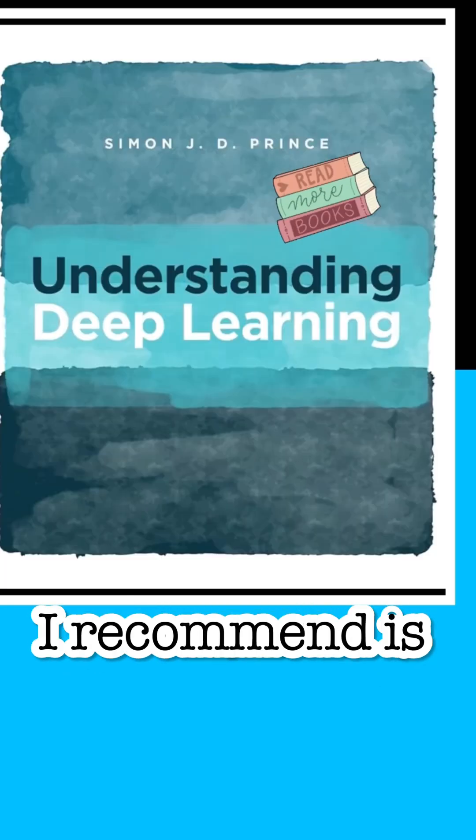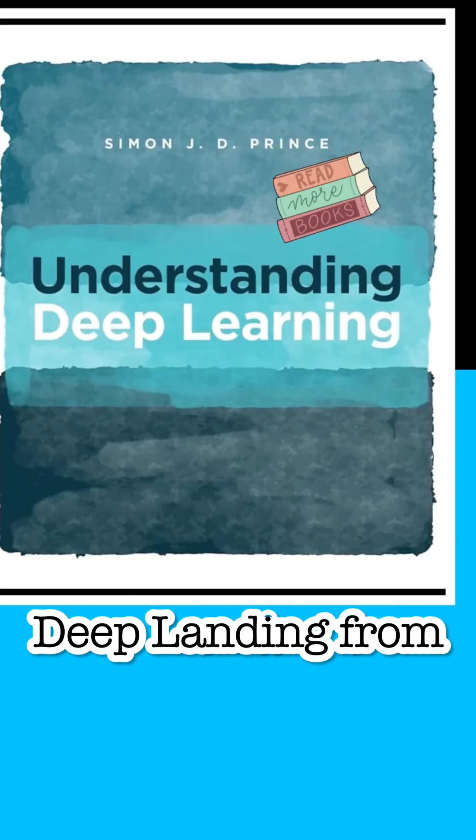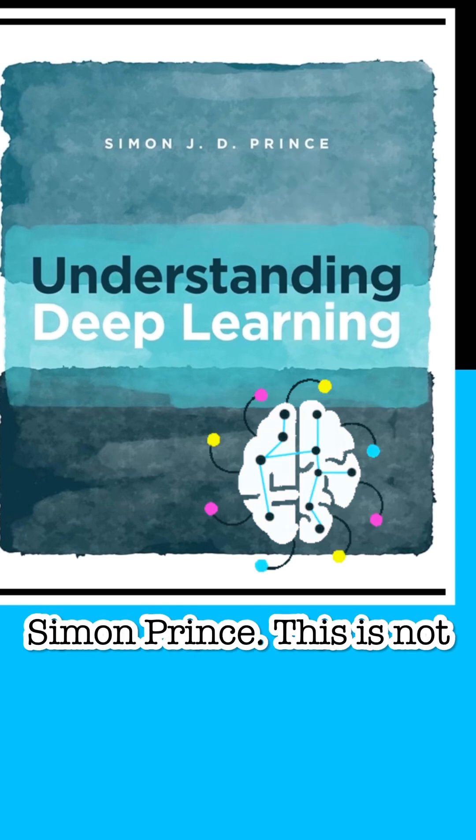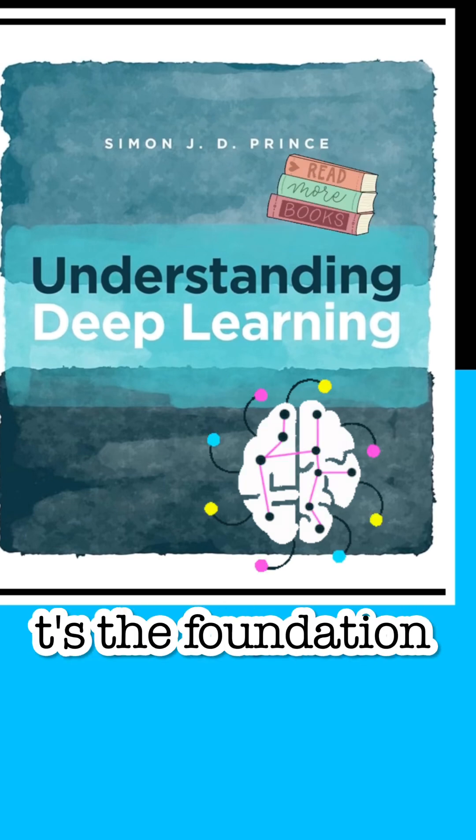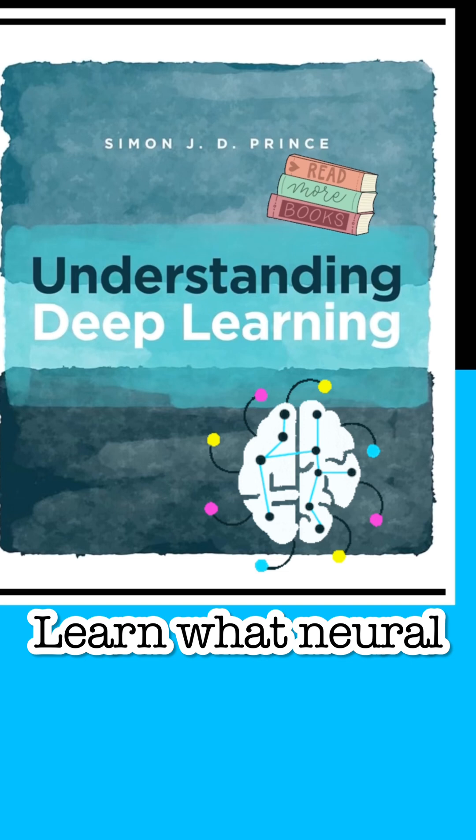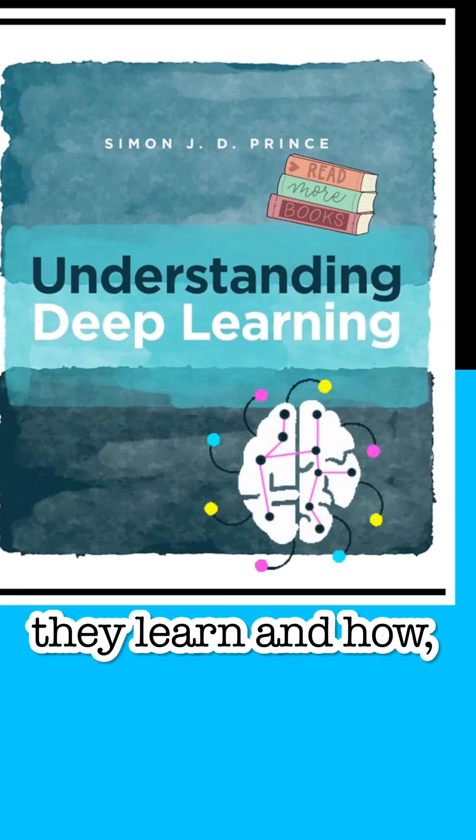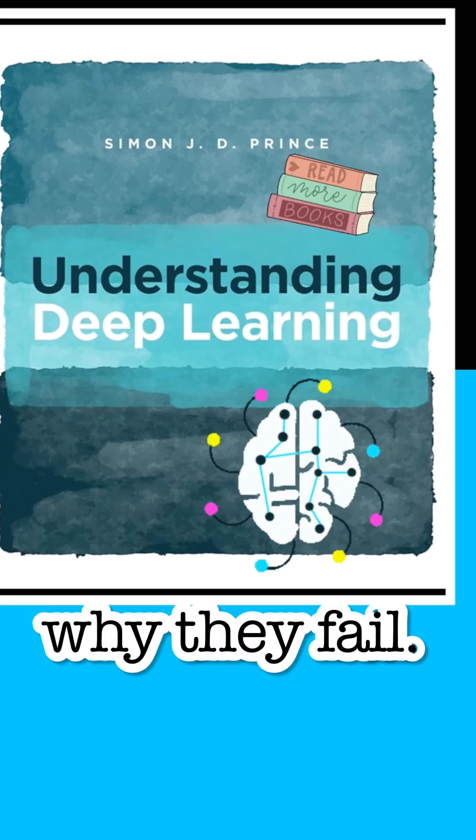The first book I recommend is Understanding Deep Learning from Simon Prince. This is not just theory, it's the foundation you need. Learn what neural networks really do, how they learn and why they fail.